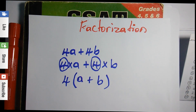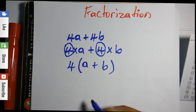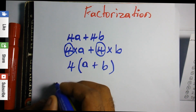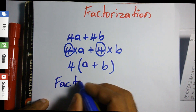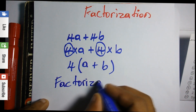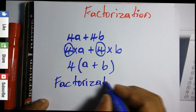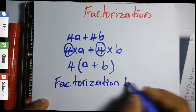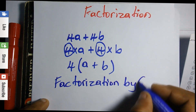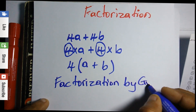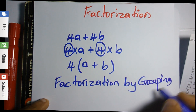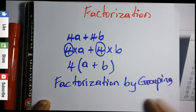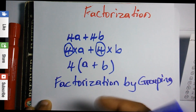So that would be our solution based on factorization by distributive law. What we'll be looking at now is factorization by grouping. Factorization by grouping is similar to factorization by distributive law.